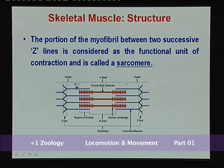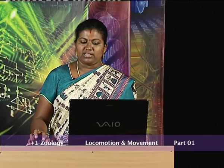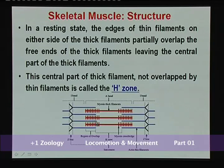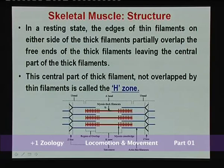In a resting state, the edges of thin filaments on either side partially overlap with the free ends of thick filaments. At the central part of the thick filament where there is no overlapping by thin filaments, that area is called H zone. In the middle of the H zone the M line runs.